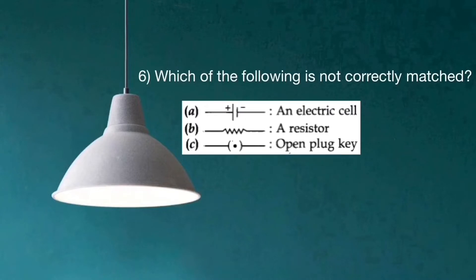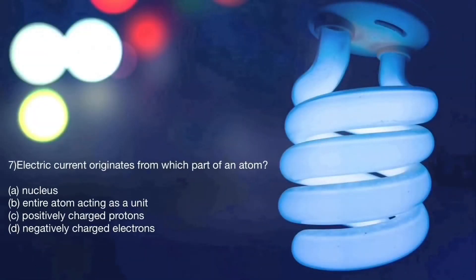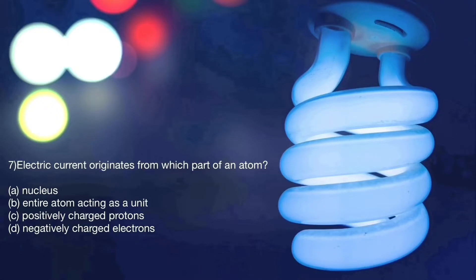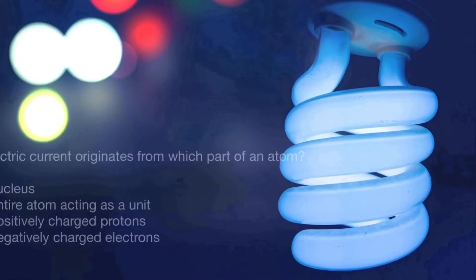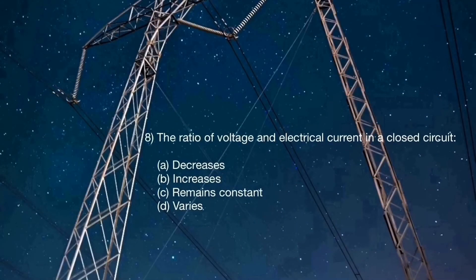Options for question six: A: an electric cell, B: a resistor, C: open plug key. Question number seven: the electric current originates from which part of an atom? A: nucleus, B: entire atom acting as a unit, C: positively charged protons, D: negatively charged electrons. Question number eight: the ratio of voltage and electric current in a closed circuit — A: decreases, B: increases, C: remains constant, D: varies.